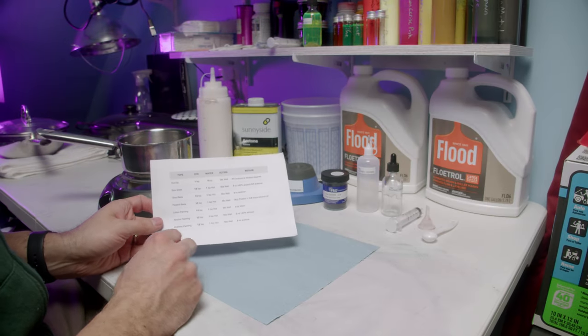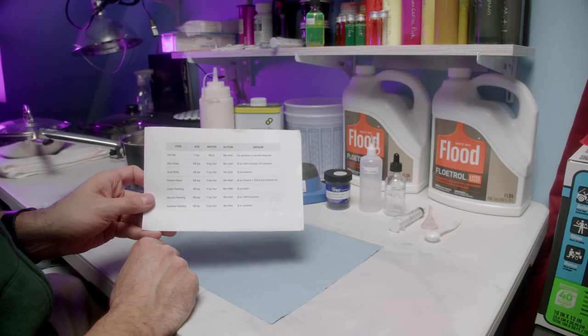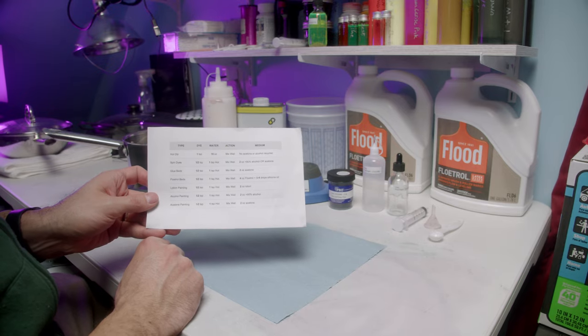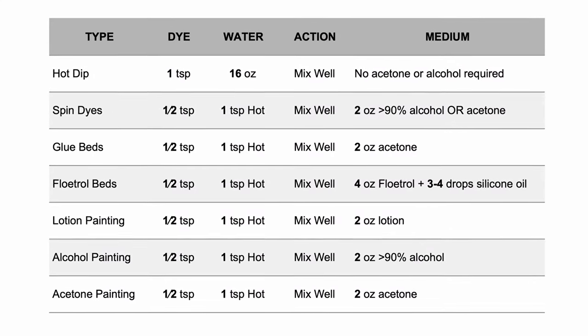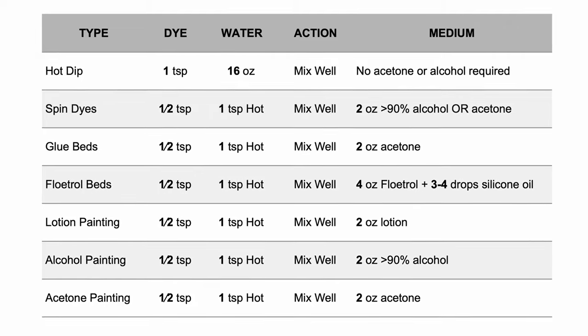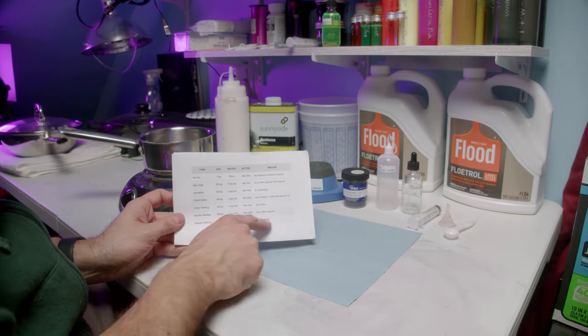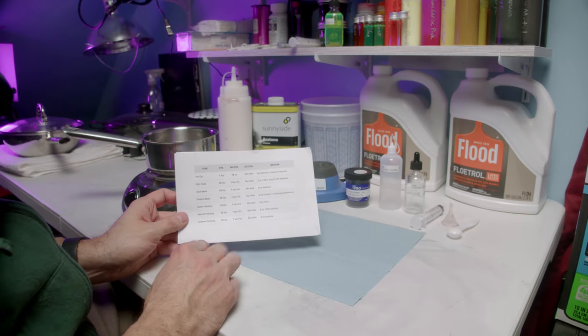So the mixture ratio that I follow is on this chart. I will have it linked in the description for you. For the lotion painting, it's half a teaspoon to one teaspoon water to two ounces of lotion. Basically the same exact thing for acetone.